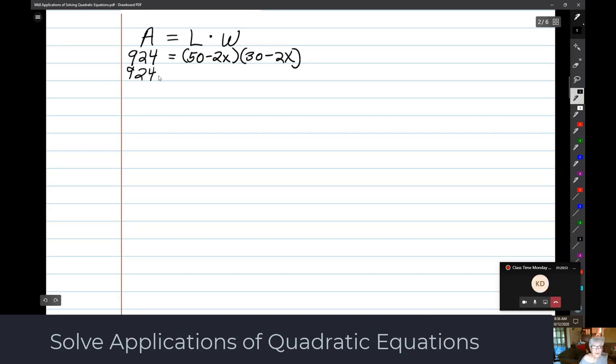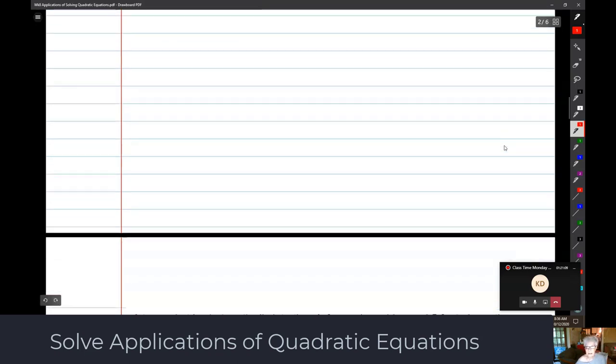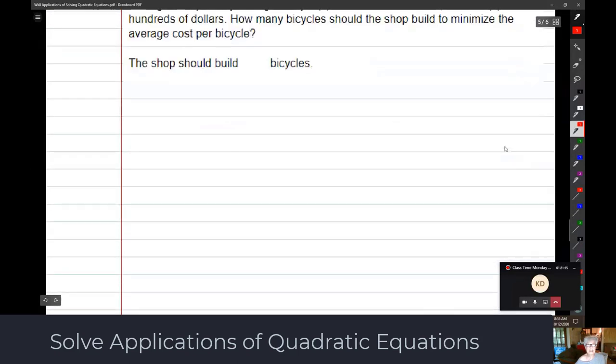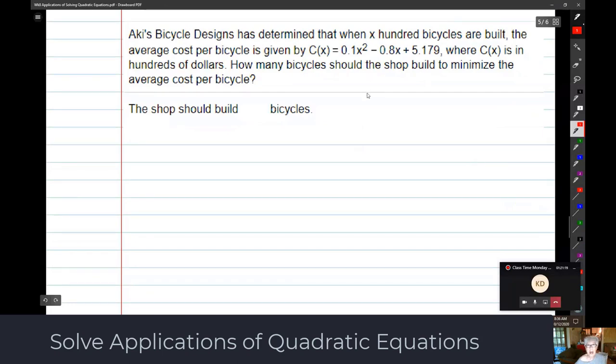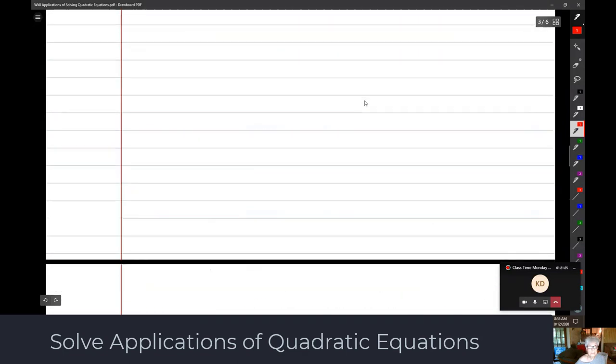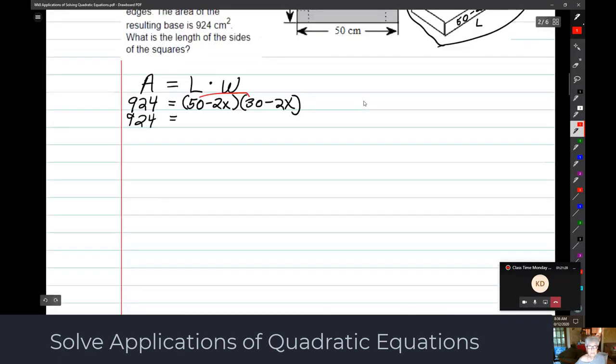What they are asking is find out what x is. So we're going to do that because we know the base of the box is a rectangle. And we know that the area of a rectangle is length times width. And we're told that the area is 924 square centimeters. That's going to equal 50 minus 2x times 30 minus 2x. And that is how you set up the problem. We'll continue with the word problems next time.